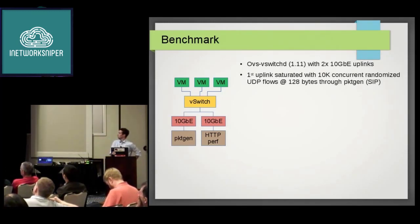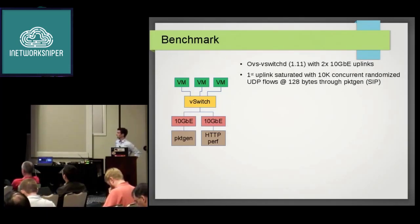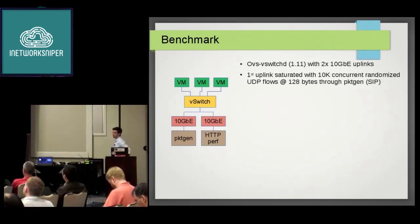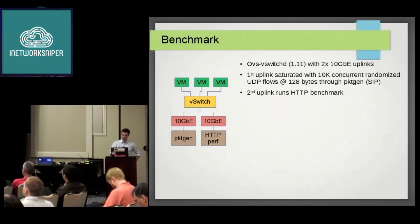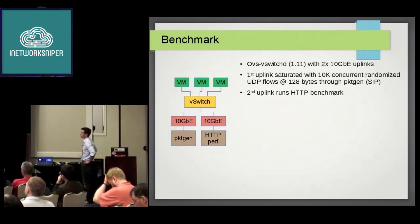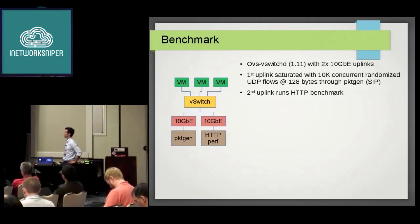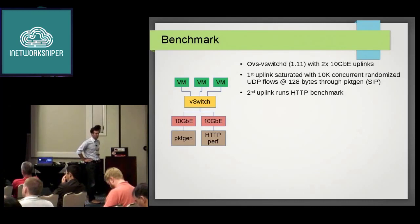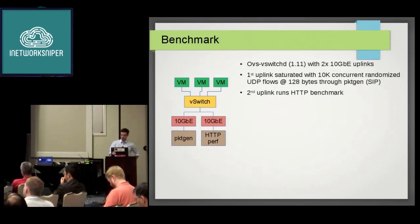We have an OVS switch with two 10-gig ports attached. The first port is saturated using PacketGen with randomized flows — maybe 50,000 flows per second. PacketGen is easily able to generate 10-gig traffic. We used 128-byte packets, meaning the upcall is not that expensive even with a software copy, but it still puts a lot of load on both the flow table and the upcall. The second uplink runs an HTTP benchmark. We did not run a single netperf use case because that would mean only one flow cache miss, after which you would only hit the fast path and essentially not use the flow table anymore.